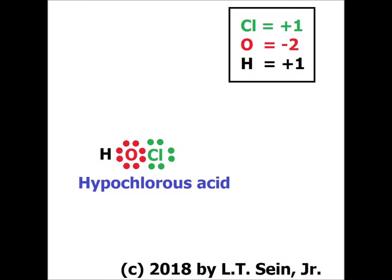Oxygen, as we'd expect, started with six and now has eight, so it has the common oxidation number of minus two. Hydrogen, as is its most common oxidation number other than zero when it's an element, started with one electron and now has zero, so it has an oxidation number of plus one in hypochlorous acid. Typically in acids, you'll see that hydrogen will have an oxidation number of plus one.